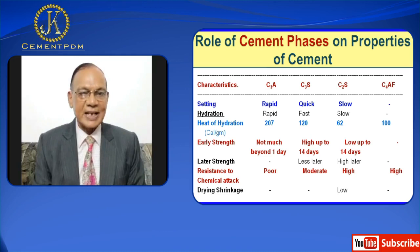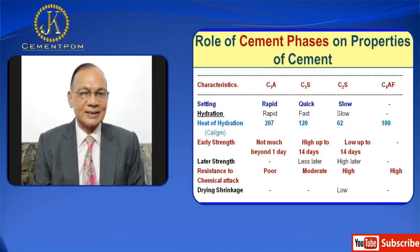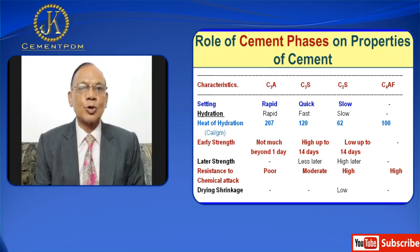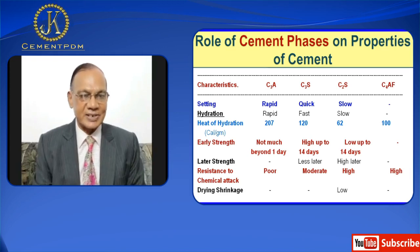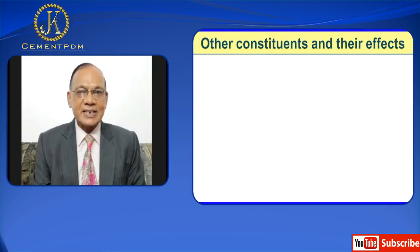C2S has low drying shrinkage. C3S, C3A and C4AF have no role to play as far as drying shrinkage is concerned.